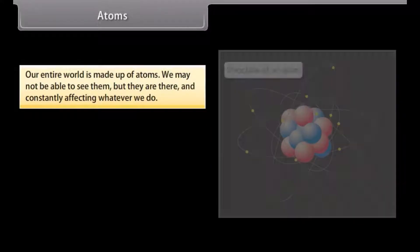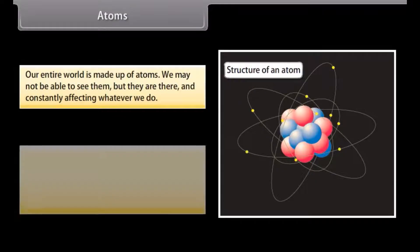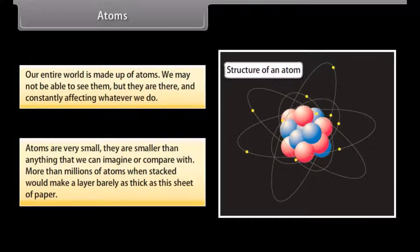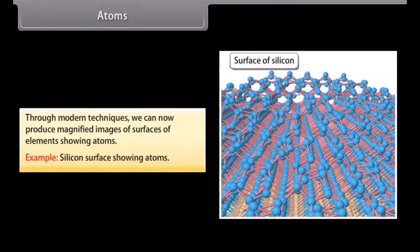Atoms. Our entire world is made up of atoms. We may not be able to see them, but they are there. Atoms are very small, they're smaller than anything that we can imagine or compare with. More than millions of atoms when stacked would make a layer barely as thick as this sheet of paper. Through modern techniques we can now produce magnified images of surfaces of elements showing atoms, for example, silicon surface showing atoms.